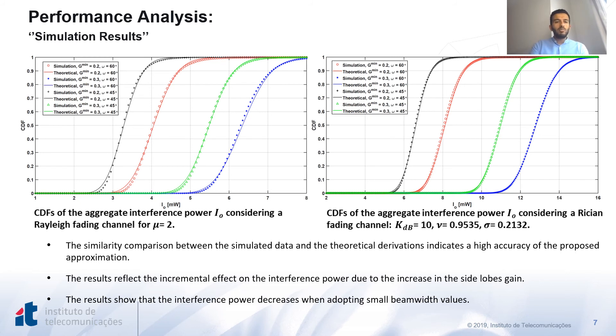We have run some simulations to validate our modeling and the derived expressions. At the left side, we compared the theoretical and simulated CDFs of the aggregate interference power for a Rayleigh channel using different beamforming parameters. At the right side, we adopted the same simulation for a Rician channel. The similarity comparison between the simulated data and the theoretical derivations indicates a high accuracy of the proposed approximations. The results reflect the incremental effect of the interference power due to the increase in the side lobes gain. The results also show that the interference power decreases when adopting small beamwidth values.